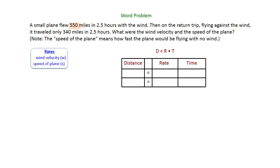So the first trip that the plane makes is with the wind. That plane went 550 miles for its distance, and it spent 2.5 hours traveling with the wind. On the return trip against the wind, the plane went 340 miles and still spent 2.5 hours in the air.